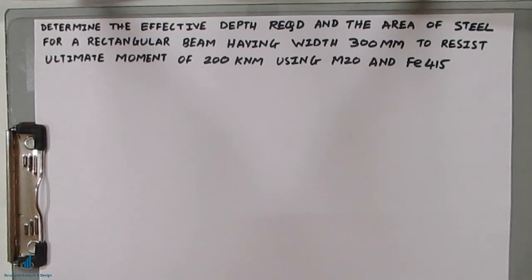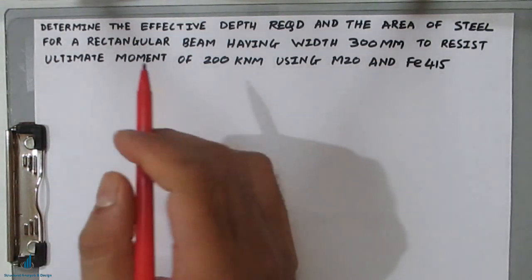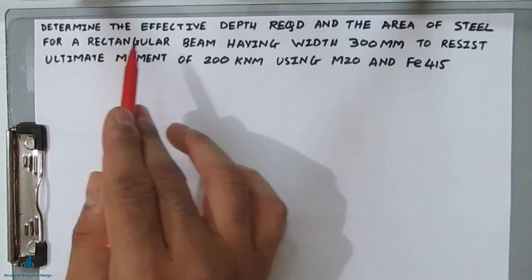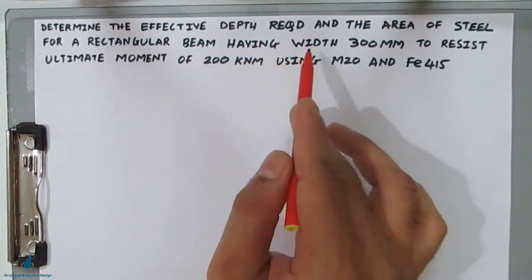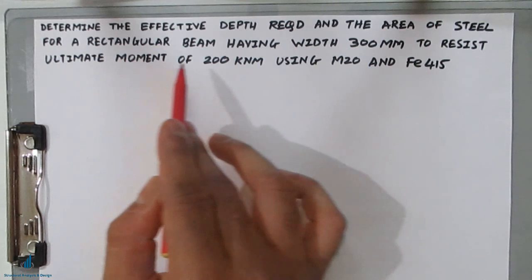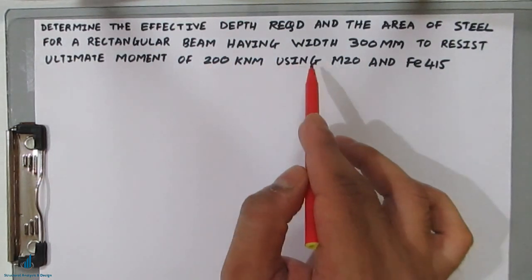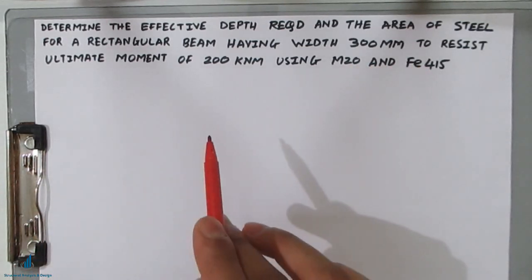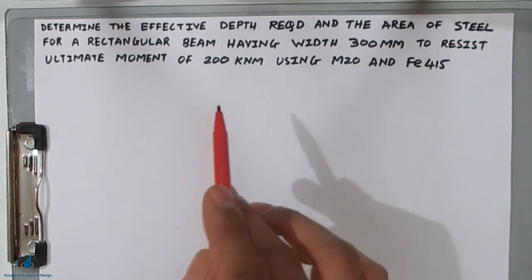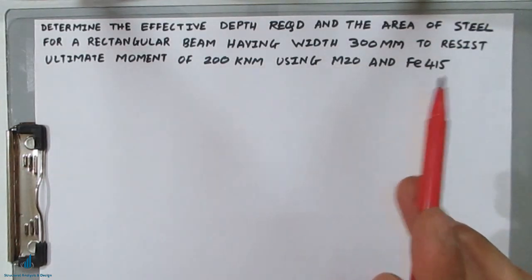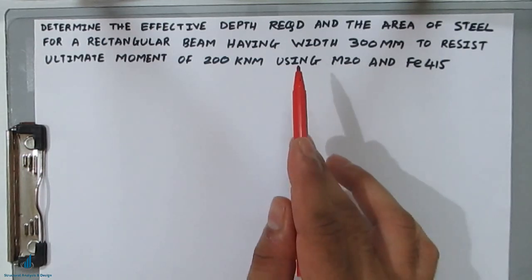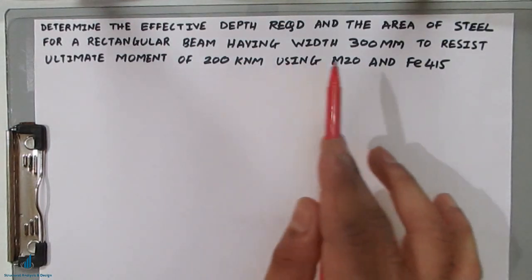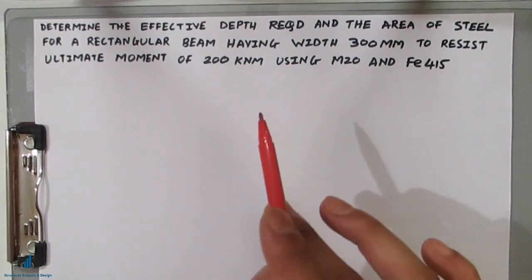In this analysis you have to calculate the effective depth and the area of steel. The problem statement is: determine the effective depth required and the area of steel for a rectangular beam having width 300 mm to resist an ultimate moment of 200 kilo-newton meter, using M20 grade of concrete and Fe 415 steel.